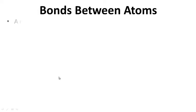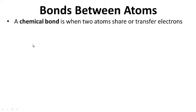Bonds between atoms. A chemical bond is when two atoms share or transfer electrons.